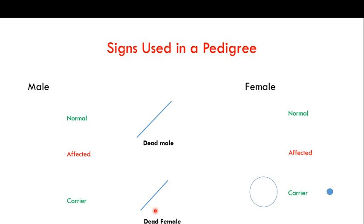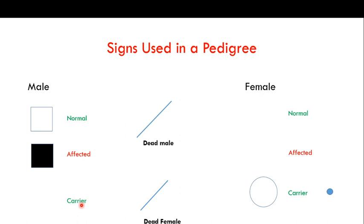When you look at a pedigree, you will see different kinds of signs, and these signs signify particular meanings. For males: a normal male is represented by an unshaded or empty square. An affected male is represented by a shaded square. A carrier male — as seen in autosomal recessive disorders — is represented by a half-filled, half-unshaded square. A dead male is represented by a square with a line above it.